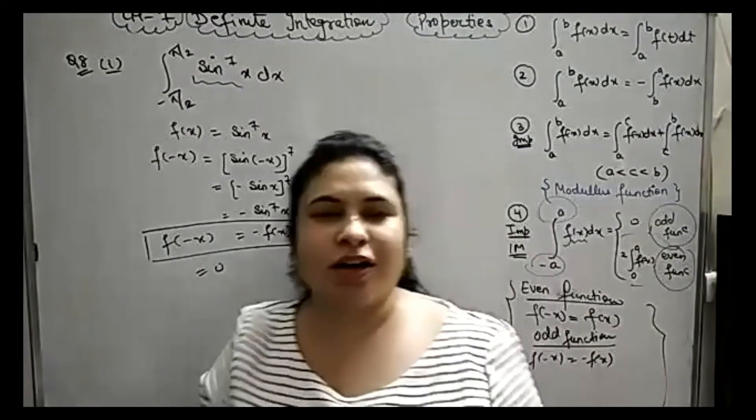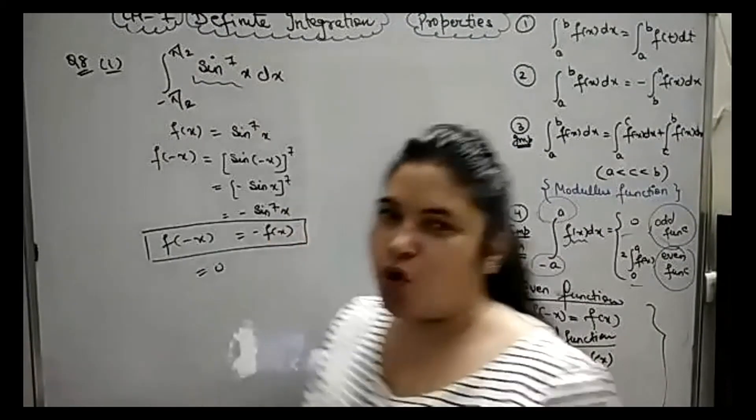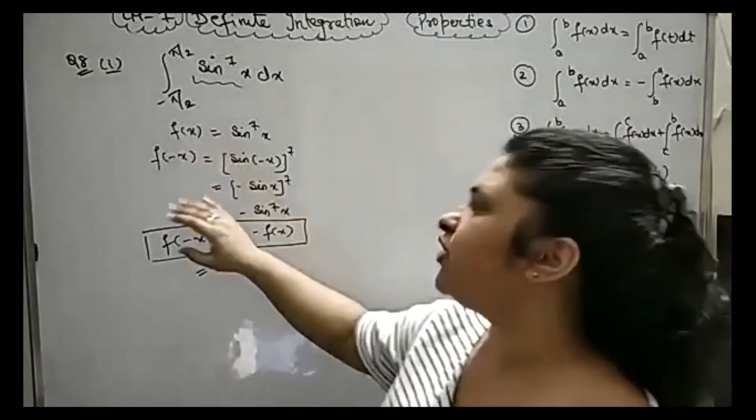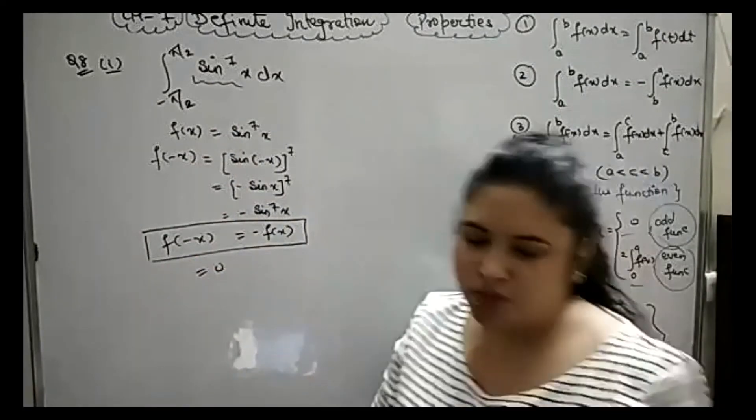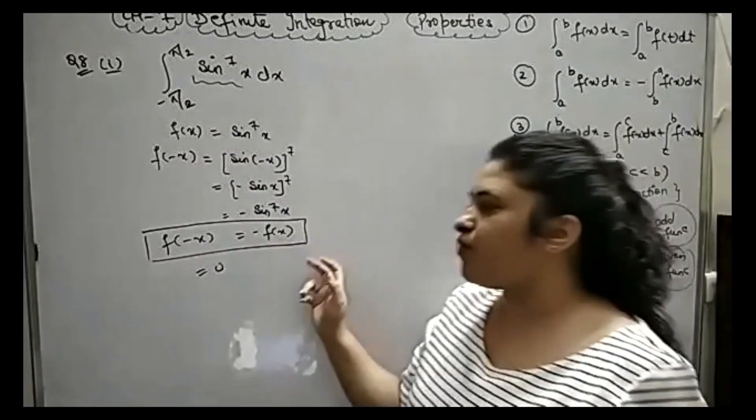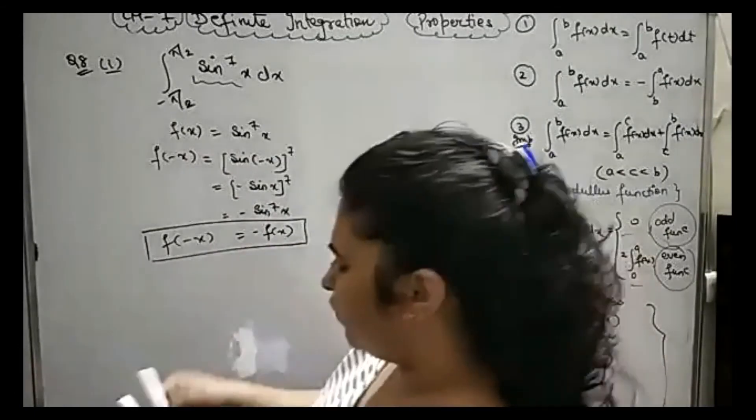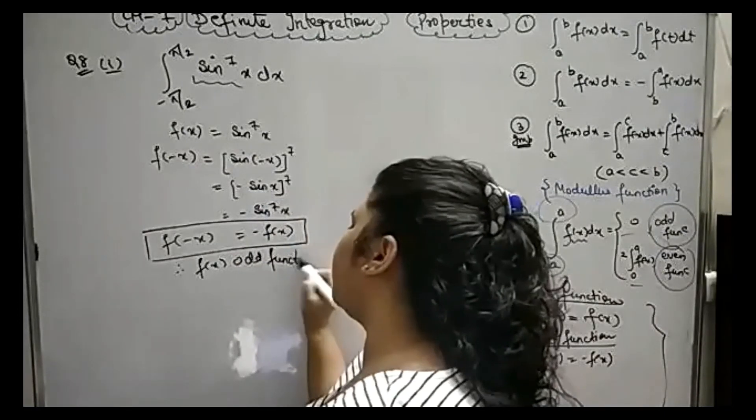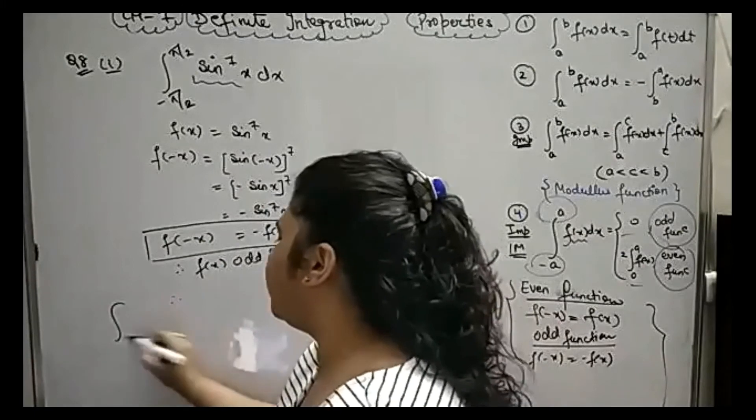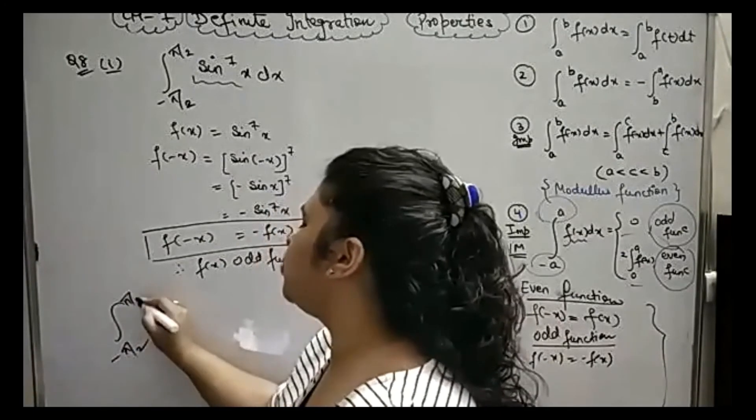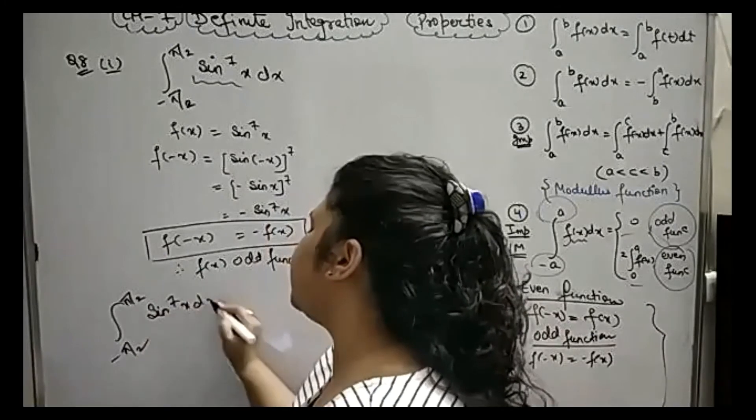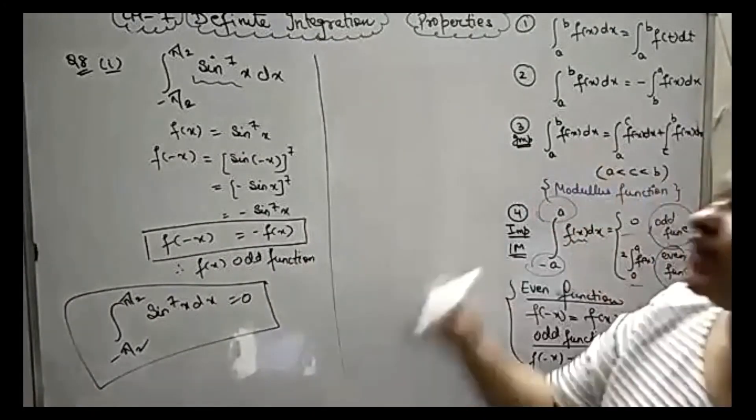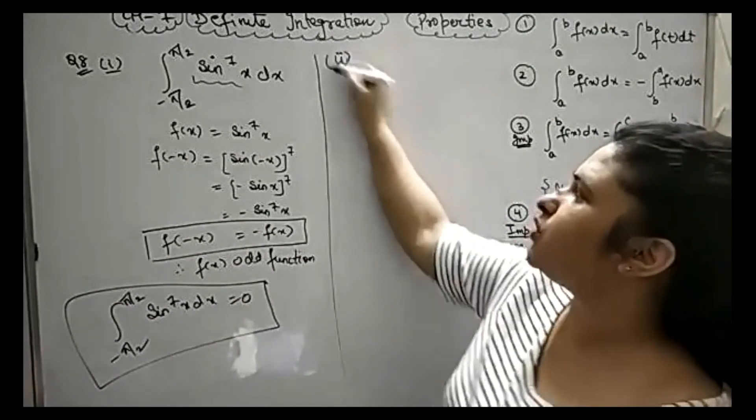I will tell you that for 1 mark questions, there's an 80% chance it is odd. But I have to show you the short answer. I checked that f of minus x was equal to minus f of x, which means odd function. Therefore, f(x) is an odd function. If it is odd function, the integration from minus pi by 2 to pi by 2 equals zero. This property is very easy, free of cost for 1 mark questions.